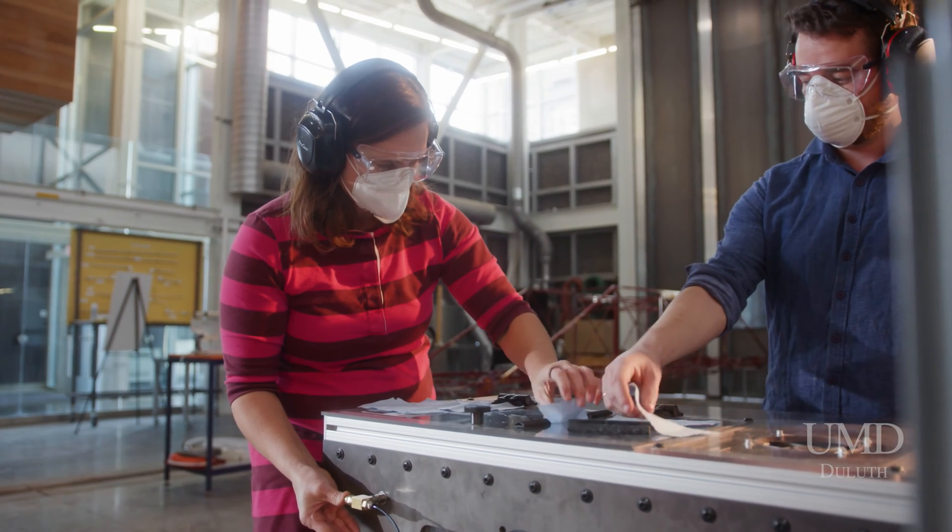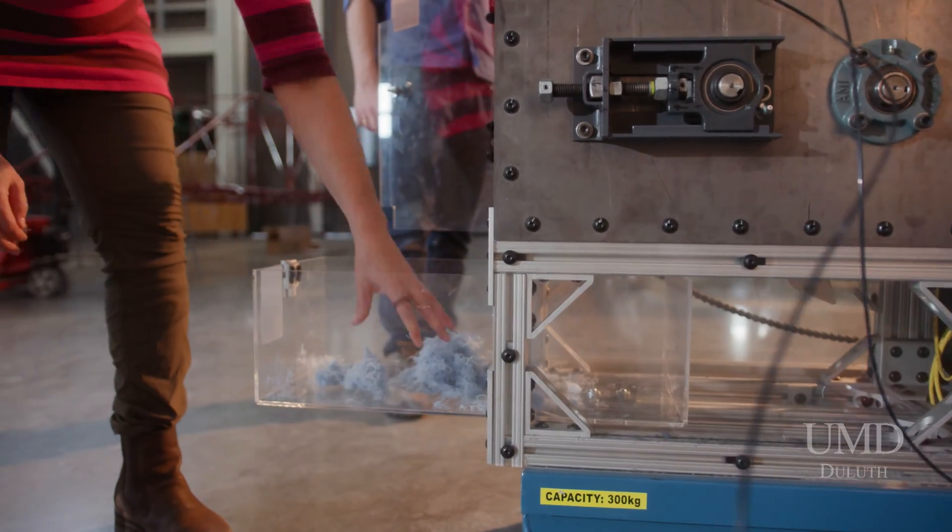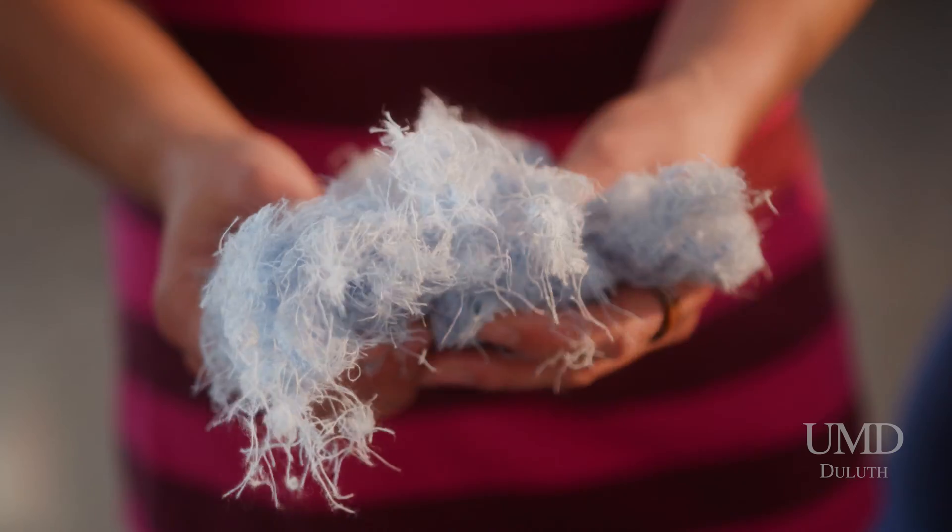Polyester, cotton, natural synthetic blends, things that have spandex or elastane in them. Our machine is flexible and versatile to be able to handle any apparel textile waste that's out there.